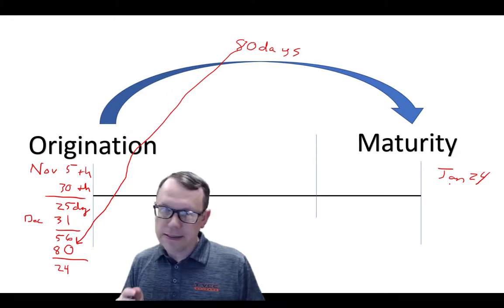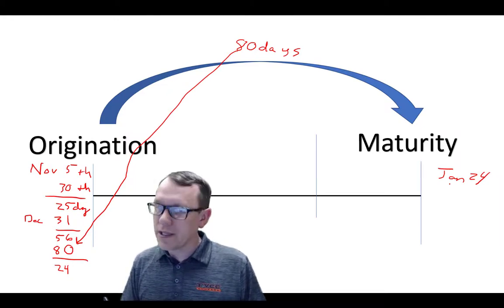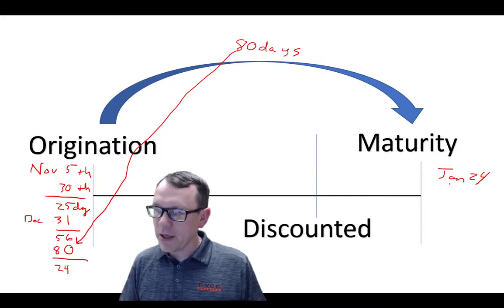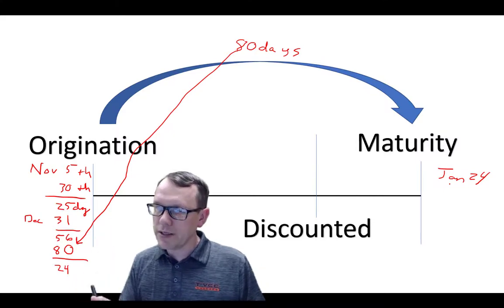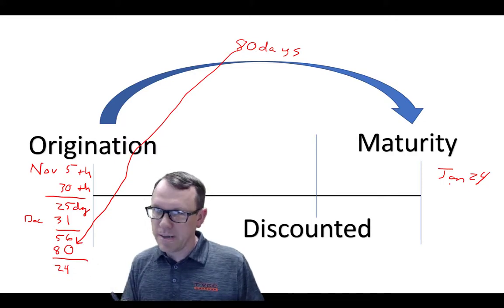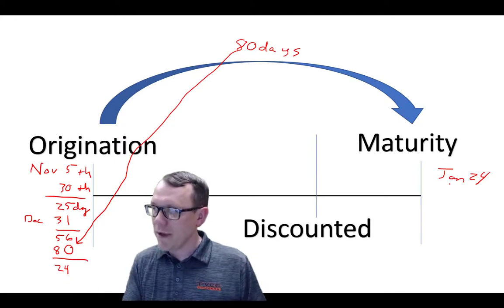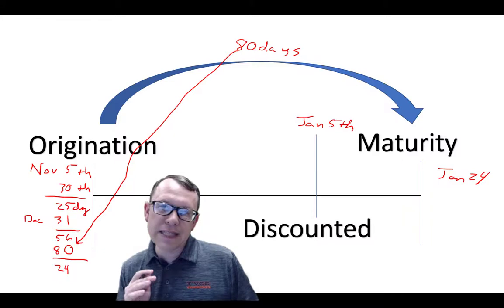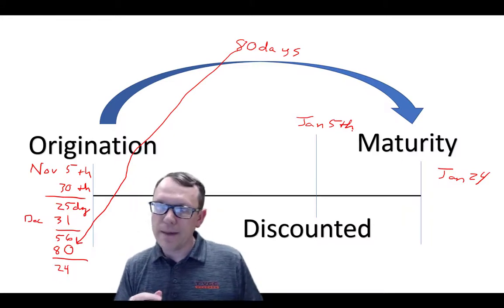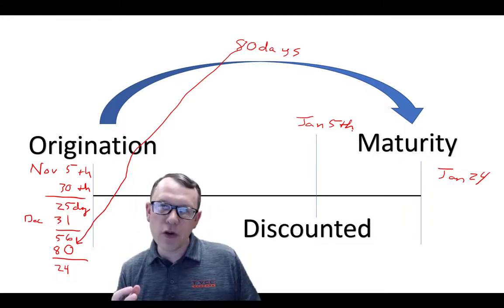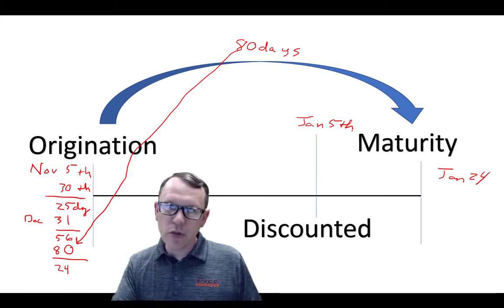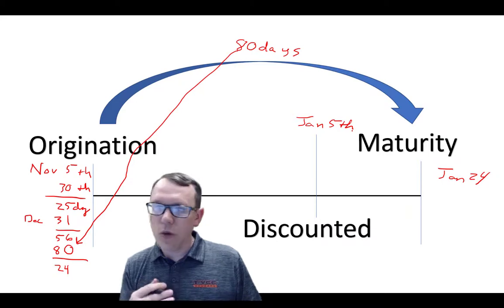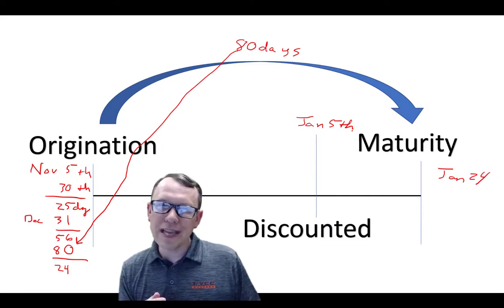The question though is what is the discount period. It is going to be discounted on January 5th. That's the discount date. January 5th is the discount day. That means that's the day that we originated this note, somebody owes us, they signed the note, they owe us money, and then we go along our way and January 5th we decide we need the cash now.